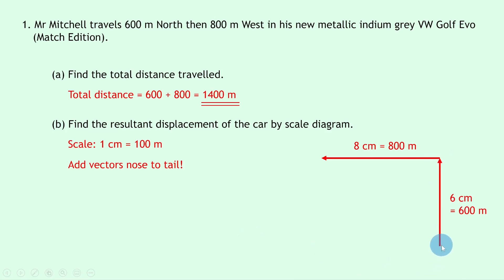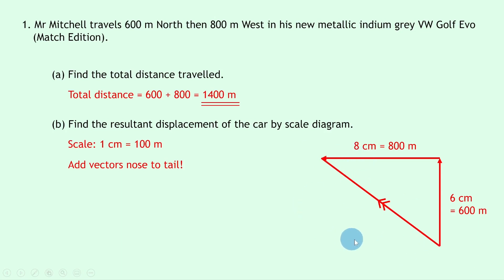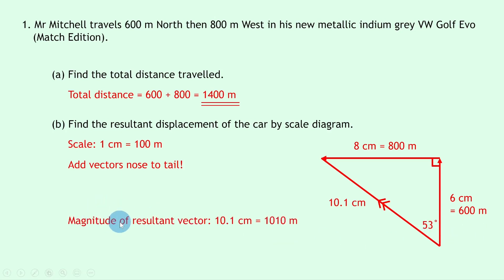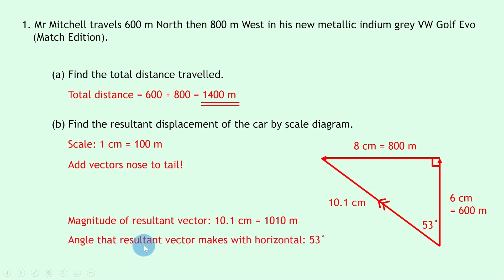We then draw the resultant vector, which is the shortest distance from the start to the finish point, marked with a double arrow. Using a ruler on paper I measured the resultant as 10.1 centimeters. We label the right angle in the triangle and measure the angle theta at the starting point using a protractor, getting 53 degrees. The magnitude of the resultant is 10.1 centimeters, which using our scale times 100 gives 1010 meters.